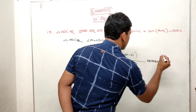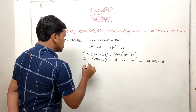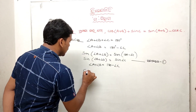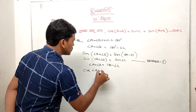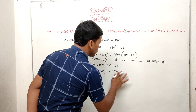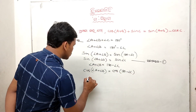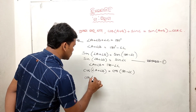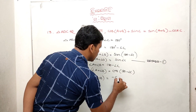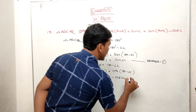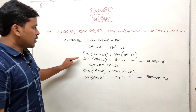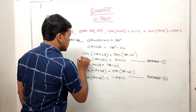Since angle A plus B equals 180 minus angle C, we apply cos to both sides. So cos(A plus B) equals cos(180 minus angle C). And cos(180 minus angle C) equals minus cos C. This result will be used going forward.